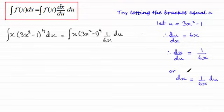And if we worked with this method, then what we've done here is we've taken f of x, which is x times 3x squared minus 1 to the power 4. And then in place of dx, we replace it with 1 over 6x du. So we've got 1 over 6x du there.